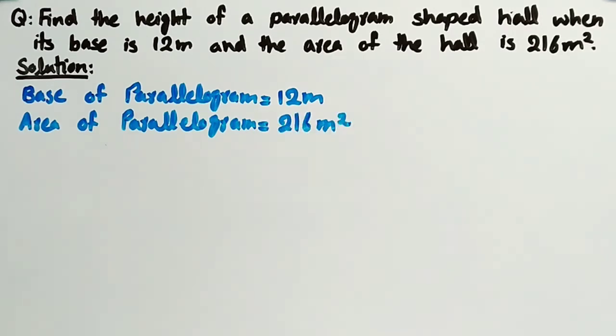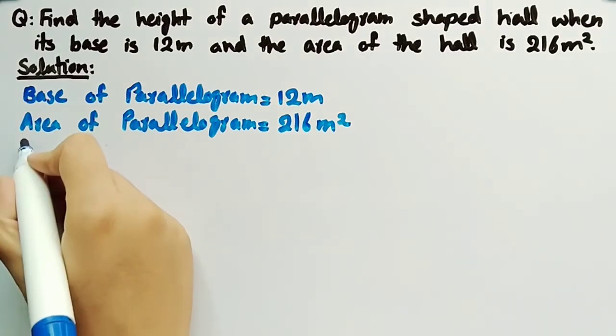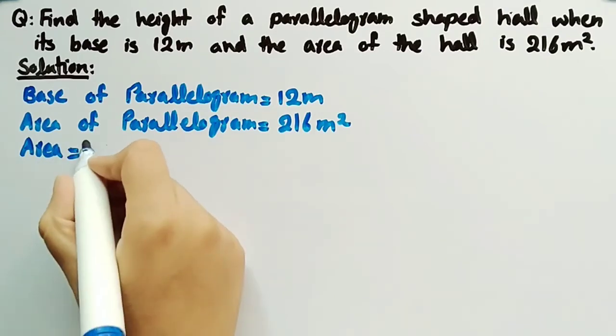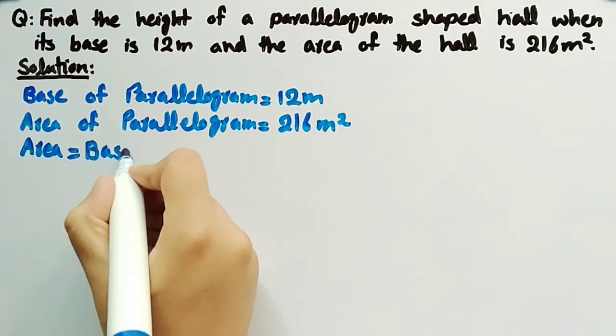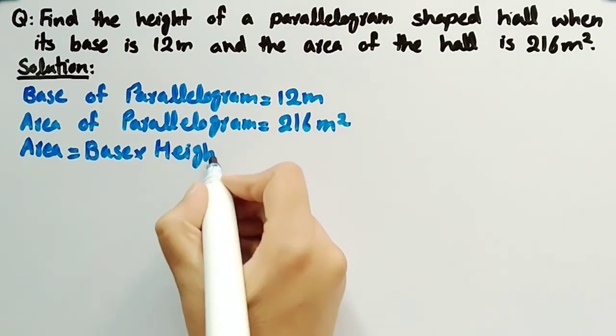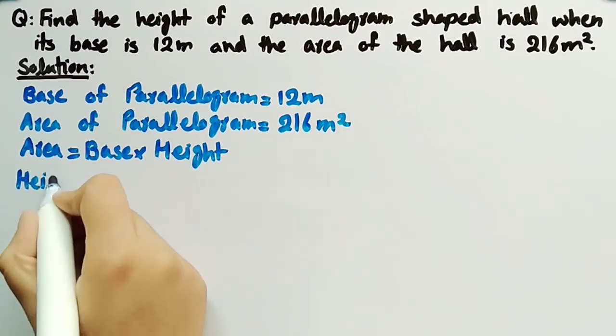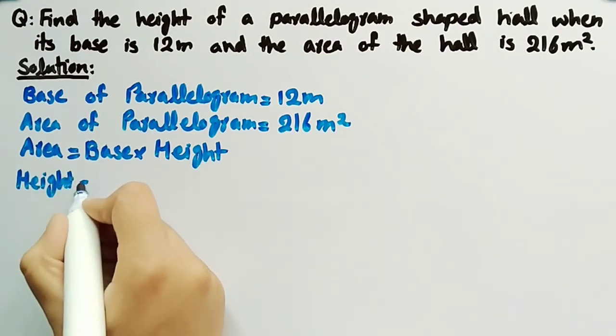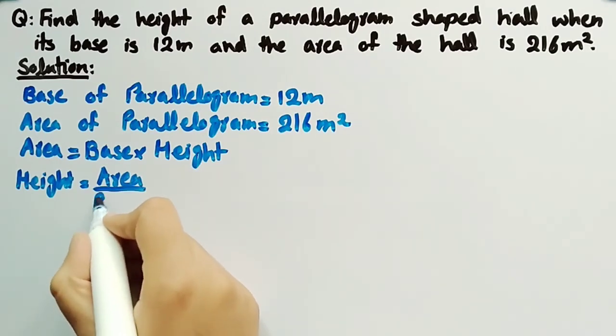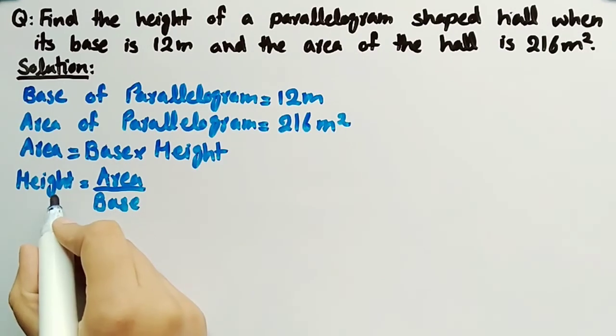Since we know that area of a parallelogram is equal to base multiplied by height, we can rearrange it and write it as height equals area divided by base. We have written it in this form to find height by dividing base on both sides of the equation.